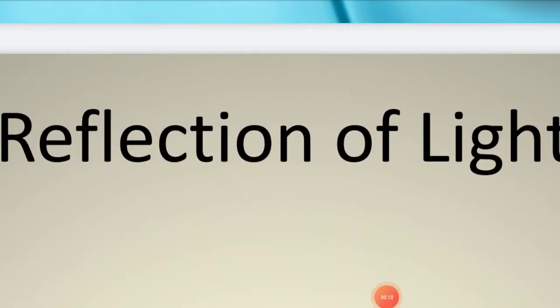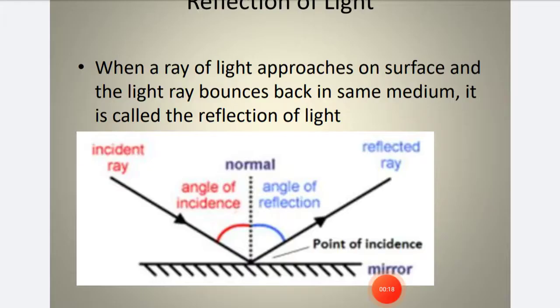Hello guys, welcome to our new channel. In this video, we'll discuss reflection of light and types of reflection. When a ray of light approaches a surface and the light ray bounces back in the same medium, it is called the reflection of light. When the incident ray strikes a plane mirror, it bounces back at the same angle - this is called reflection.